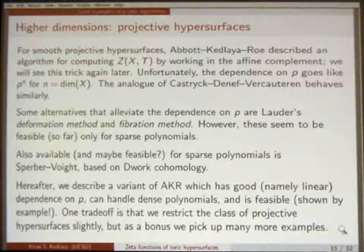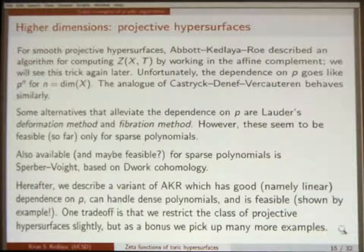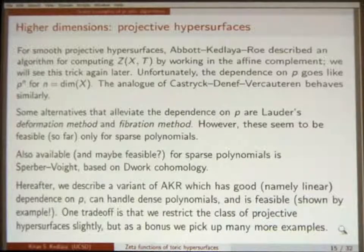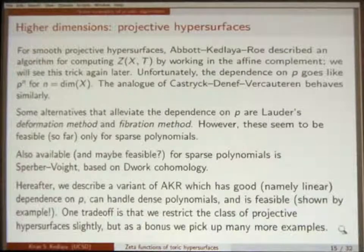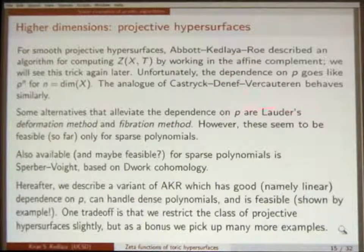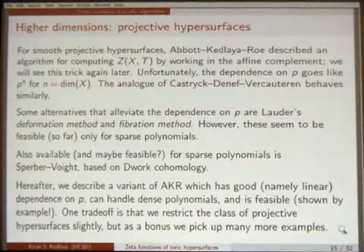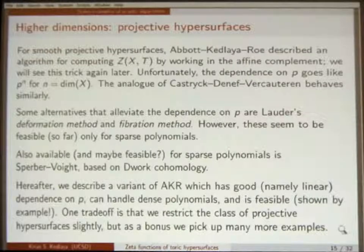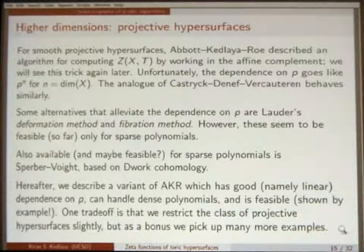But the dependence on p grows with the dimension in an inconvenient way. If you try to generalize the Castryck-Vercauteren and the non-degenerate curves construction, it has a similar feature — it ends up being p to the N. The reason I stopped pursuing that approach is because I knew there was an O(p) method that Alan Lauder had described in terms of deformations. You can either do a fibration construction where you fiber in curves and do a relative construction, or deformations using a pencil of hypersurfaces giving rise to a Picard-Fuchs equation or Gauss-Manin connection.